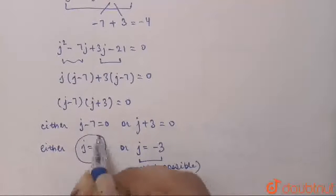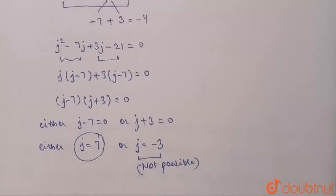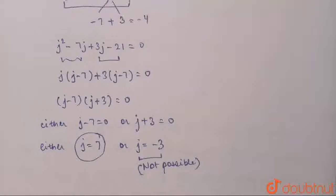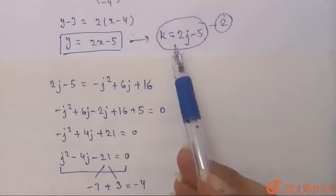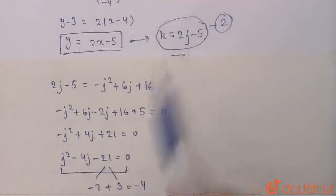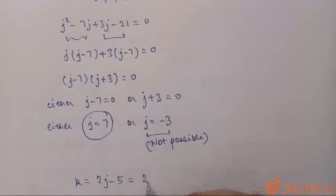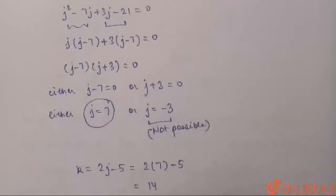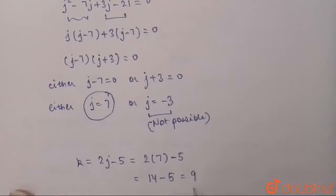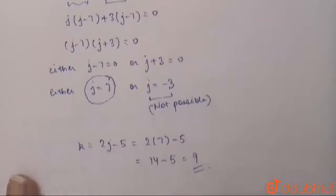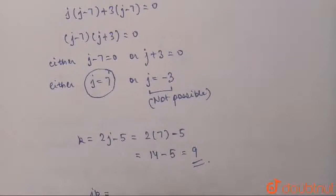Hence the value of j is 7. Putting j = 7 into equation 2, k = 2j - 5 = 2(7) - 5 = 14 - 5 = 9. So the value of k is 9, and the product j·k = 7 × 9 = 63. So 63 is our answer.